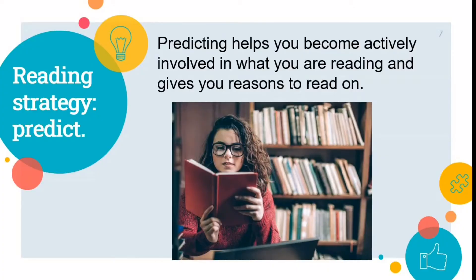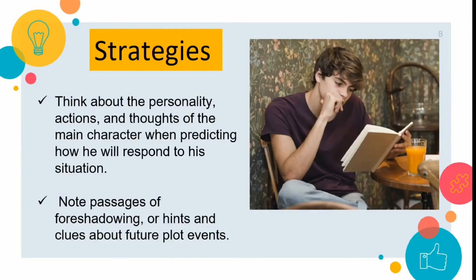Reading Strategy: Predict. When you predict, you use text clues to guess what will happen next in a story. Predicting helps you become actively involved in what you're reading and gives you reasons to read on. To make sound predictions about what will happen in To Build a Fire, use the following strategies: think about the personality, actions, and thoughts of the main character when predicting how he will respond to his situation. Note passages for foreshadowing — hints and clues about future plot events.